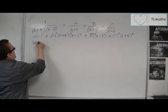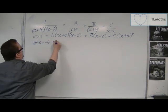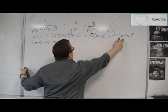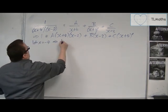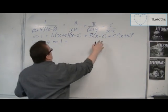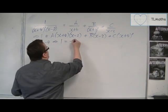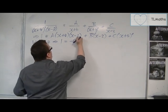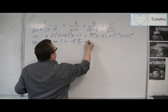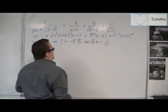Now, when we're at this stage, we can let x be equal to minus 4 to start off with. That's going to eliminate that bracket and that one. So I'm going to have 1 is the same as minus 4 take away 2, so minus 6, sorry, not a, b. So b is minus 1 sixth.